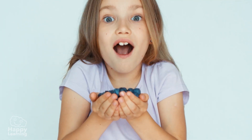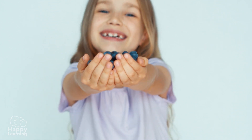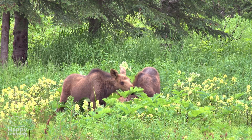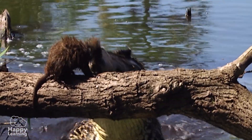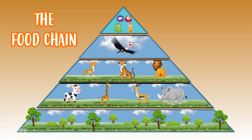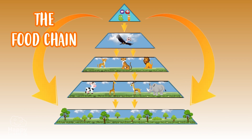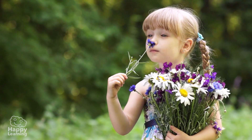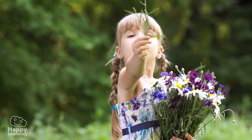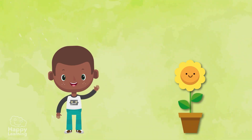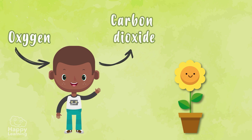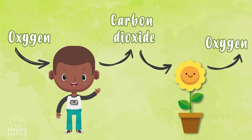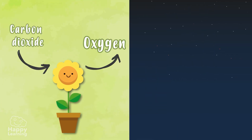Now we know how photosynthesis takes place, but why is it so important? Without plants, there would be no life on Earth. We wouldn't have oxygen to breathe or food to feed on. Herbivores eat plants, and carnivores eat herbivores. Plants are fundamental for the food chain and also for our respiration.